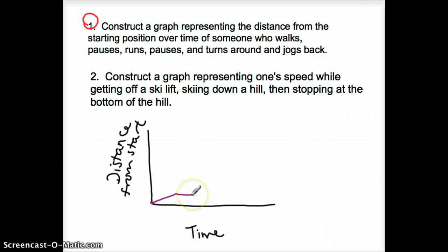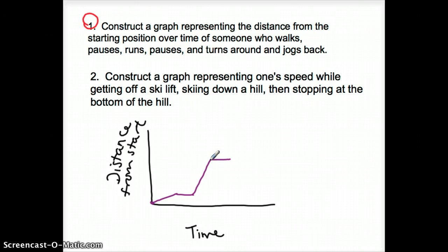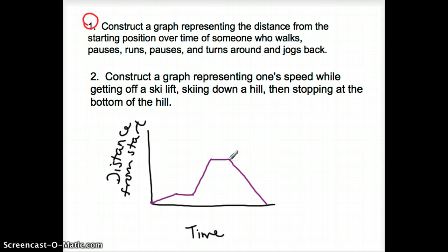When they run, this part of the graph should be a lot steeper than the walk because they go faster. Then they pause again — flat for a little while. Then they turn around and jog back, so they're getting closer to the start again. Since they're jogging, that should be in between the paces of running and walking — the line shouldn't be as steep as running, but not as flat as walking.